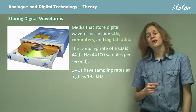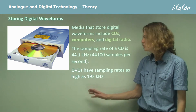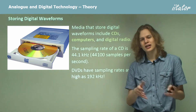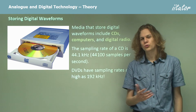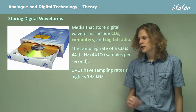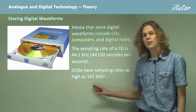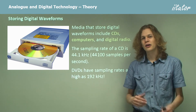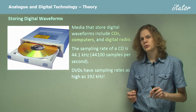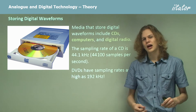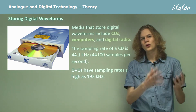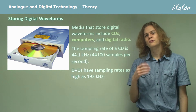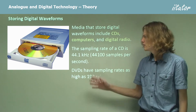DVDs have a much higher sampling rate — they can get as high as 192 kilohertz, meaning in every second of sound on a DVD there are 192,000 samples. In this case it's just about impossible to tell the difference between the digitized version and the original analog version. This means that DVDs have much higher fidelity than CDs.